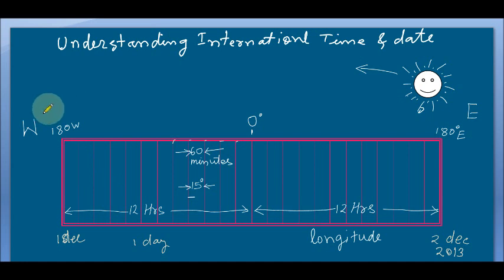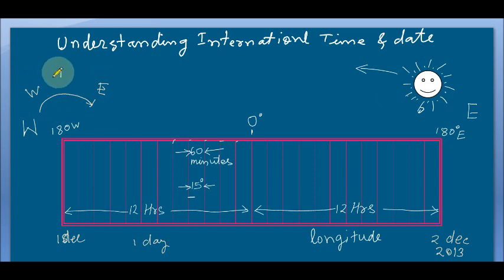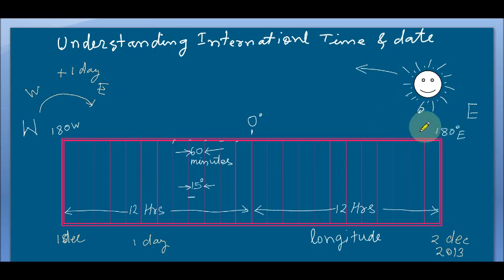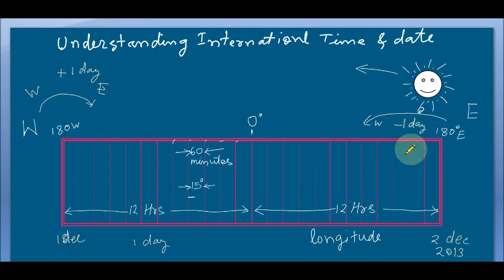If a person crosses the 180-degree longitude from west to east — mind it, this is very important — he will add one day, meaning he will increase his date by one day. So if it is 1st December, he will adjust his date to 2nd December. And if a shipman crosses the 180-degree longitude from east to west, he will reduce his date by one day — adjusting it from 2nd December back to 1st December.